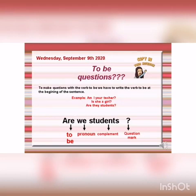To make questions with the verb to be, we have to write the verb to be at the beginning of the sentence. Example: Am I your teacher? Is she a girl? Are they students? Are is the verb to be, we is the pronoun, and student is a complement. It is very important to write question marks when you write a question.